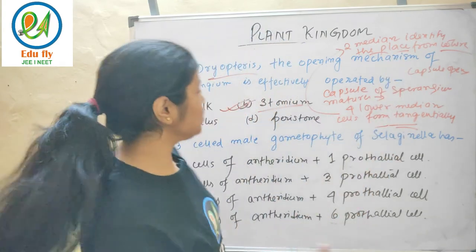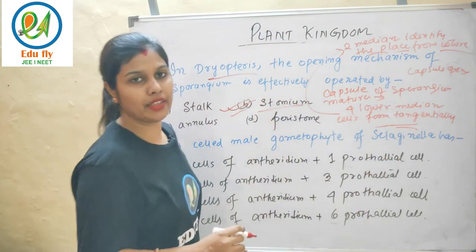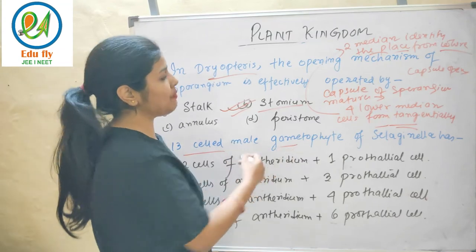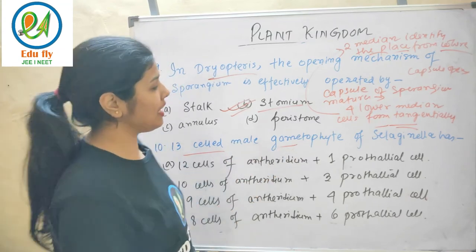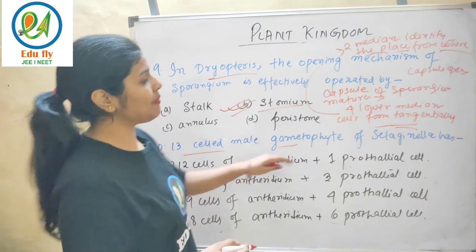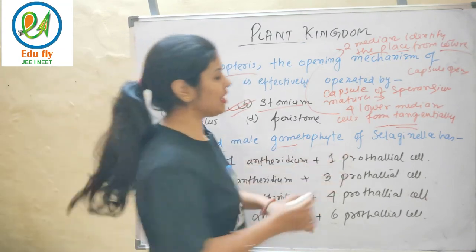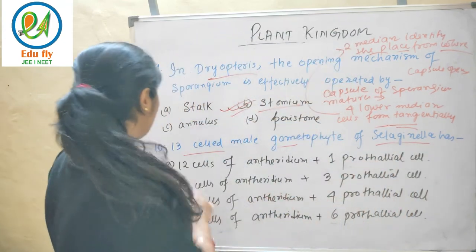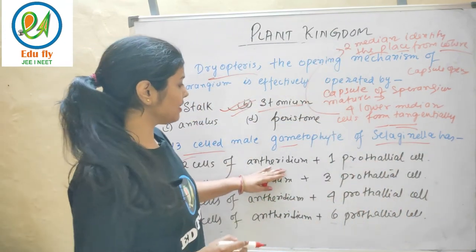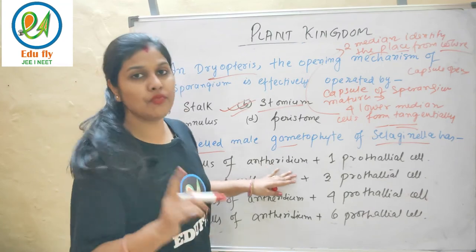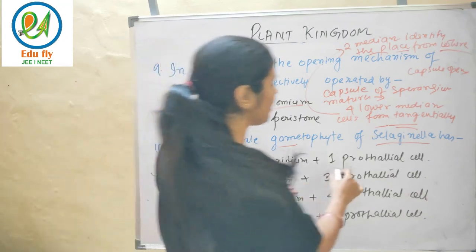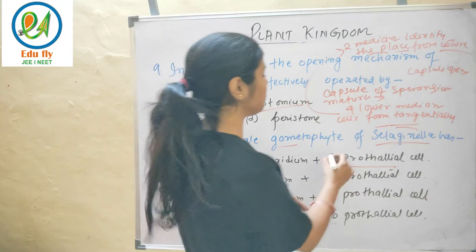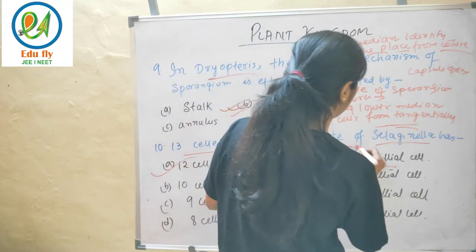The 13-celled male gametophyte of Selaginella: the answer has 12 cells of the antheridium and one prothallial cell. In the prothallus there are antheridia and archegonia — both male and female gametes.